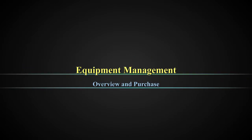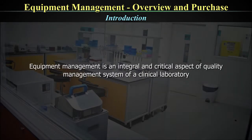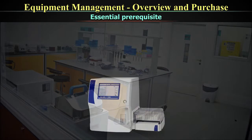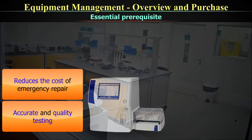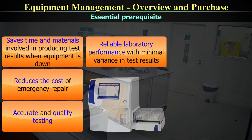In this video, we will talk about Equipment Management. The first component we will discuss is Overview and Purchase. But before we go into the details, let's see why Equipment Management is important. Equipment Management is an integral and critical aspect of the quality management system of a clinical laboratory. It is an essential prerequisite for accurate and quality testing. It reduces the cost of emergency repair, saves time and materials involved in producing test results when equipment is down, and reliable laboratory performance with minimal variance in results is assured.